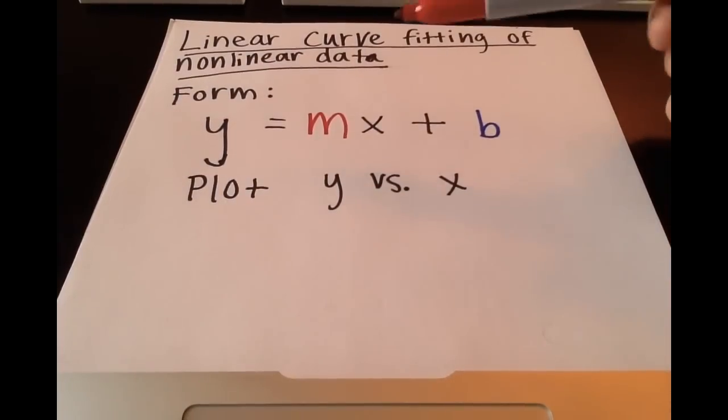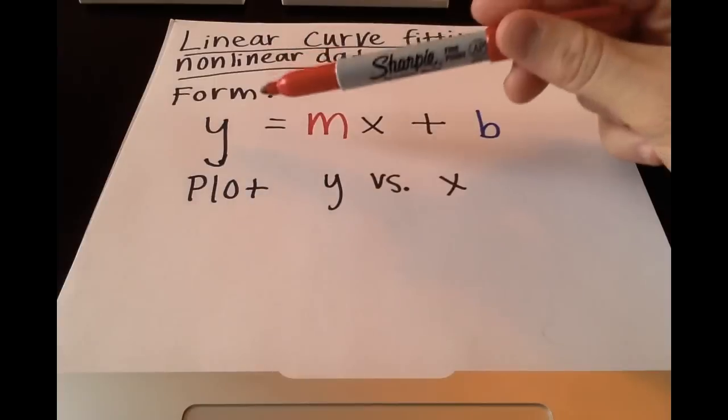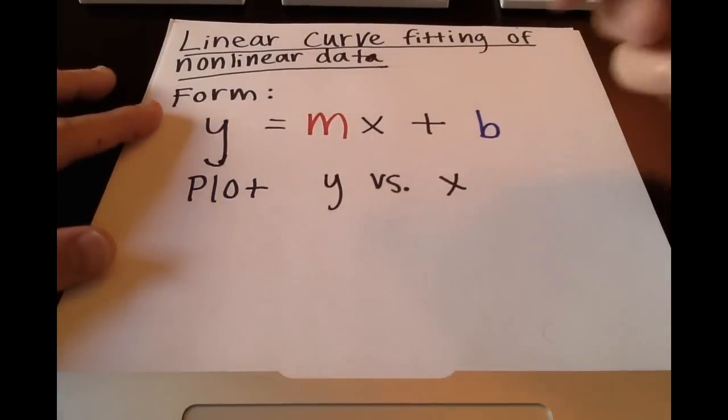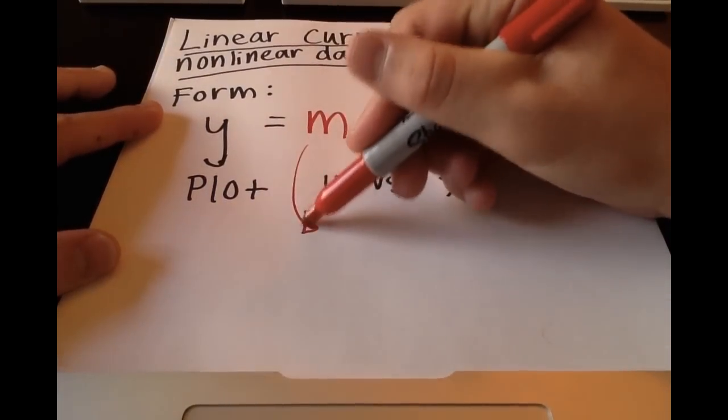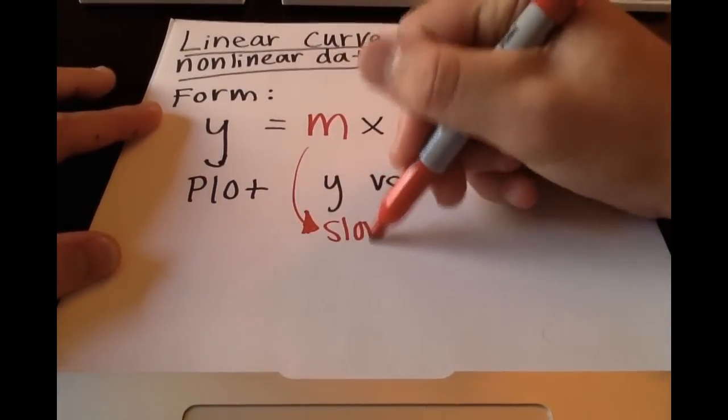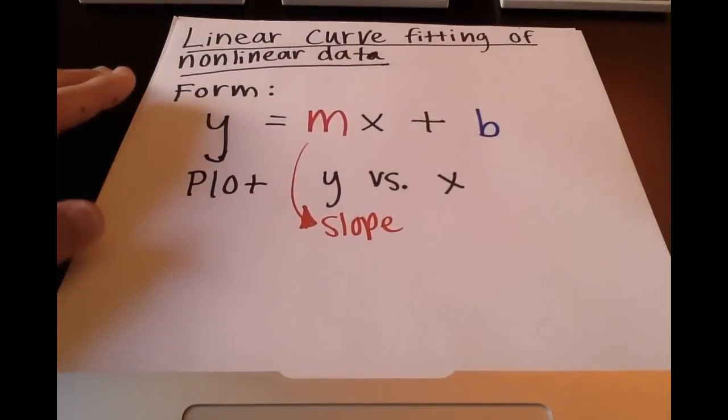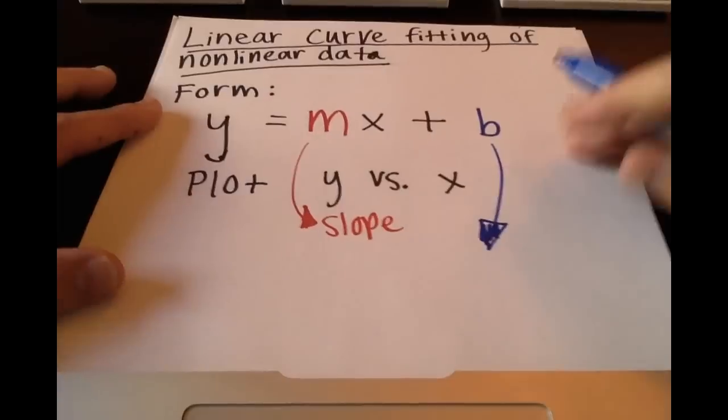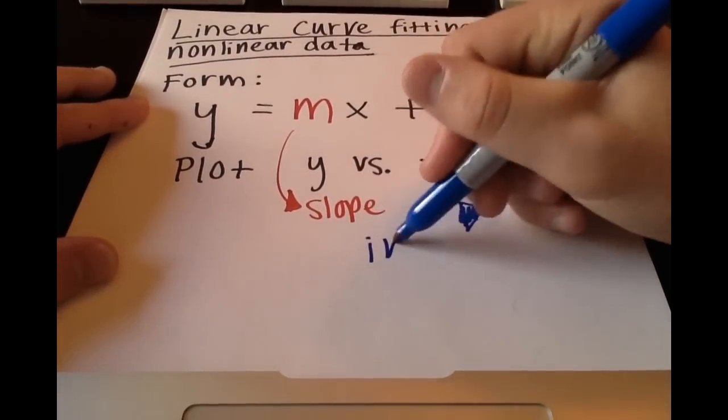What you'll need to do is get the equation into the form y = mx + b. The reason we're doing that is because we want to get a plot that is a straight line. When you plot y versus x, if done correctly in this form, you'll get a straight line where m is your slope and b is your intercept.